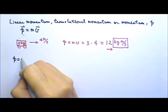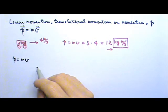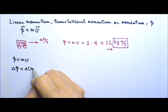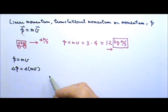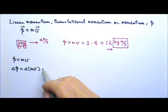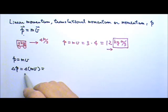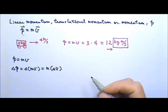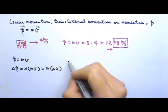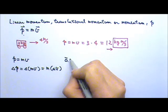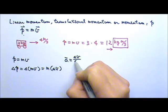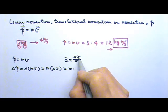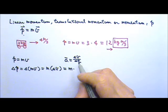Since momentum is m times v, that means the change in momentum would be the change in m times v. If the mass does not change, then we can take the mass m, the constant mass, out of this delta. And we know that the average acceleration is delta v over delta t. Which means I can rewrite the delta v as average acceleration times time.